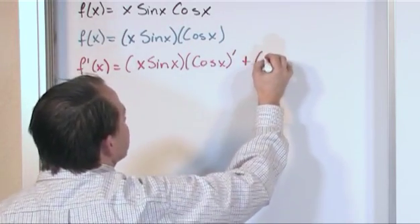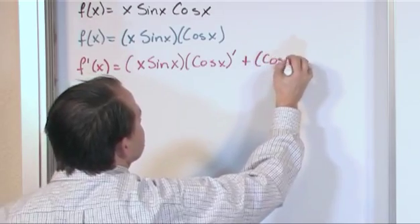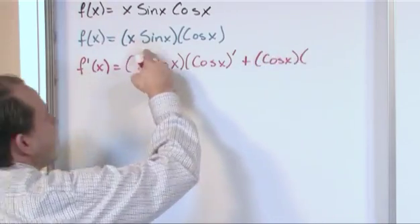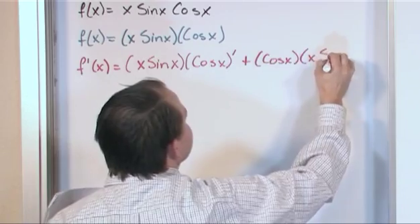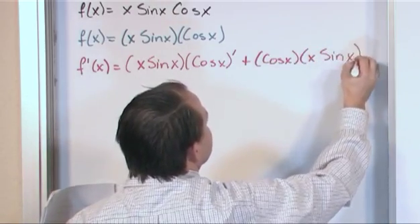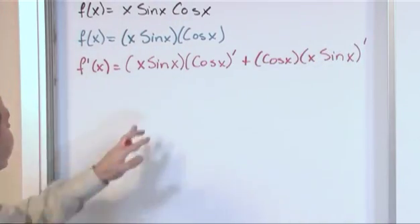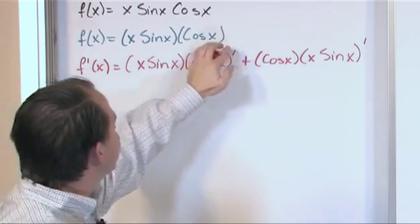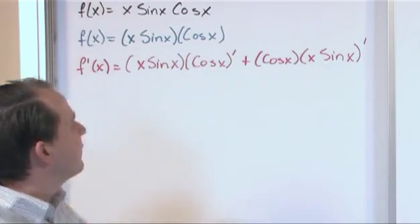Plus the second function, cosine of x times the derivative of the first function, x times the sine of x, like this. So the first function times the derivative of the second, plus the second function times the derivative of the first function.